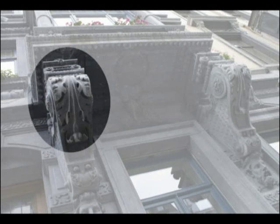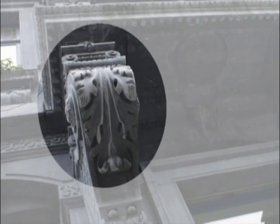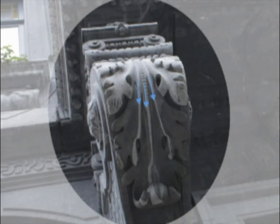Gravity is the final environmental factor that must be taken into account. Water always wants to travel downwards, reaching the lowest point on the surface before it finally drips off.